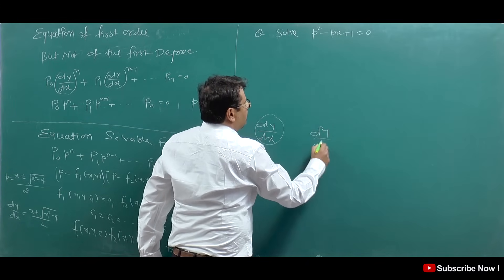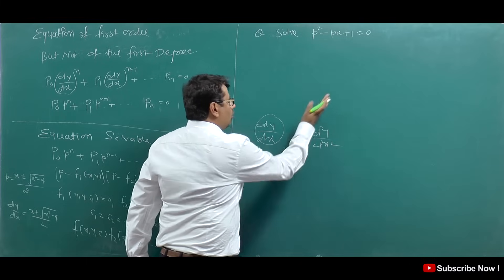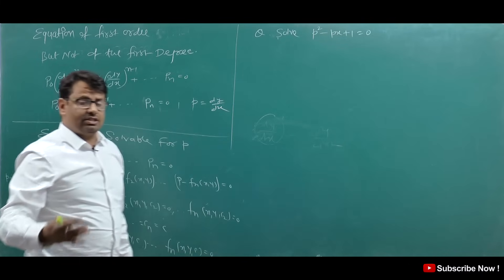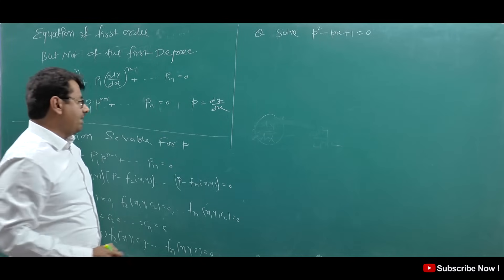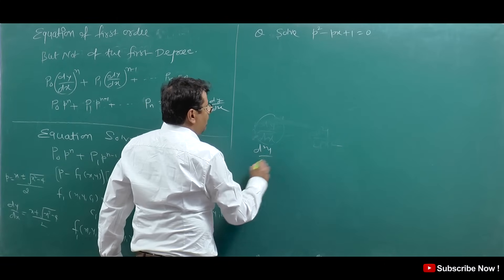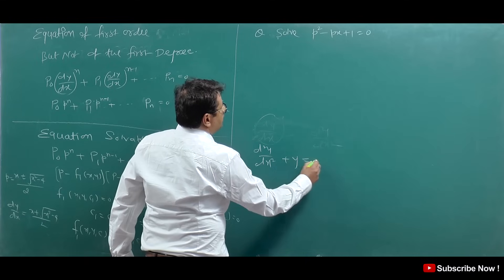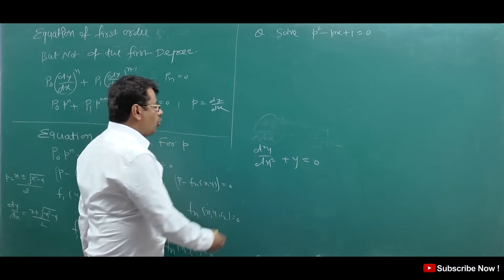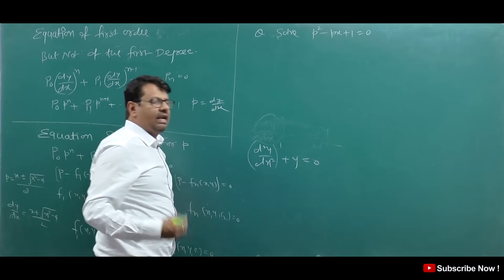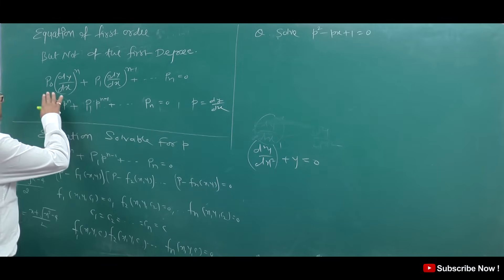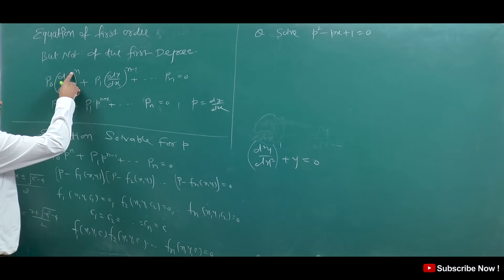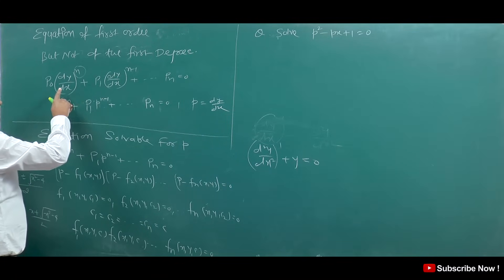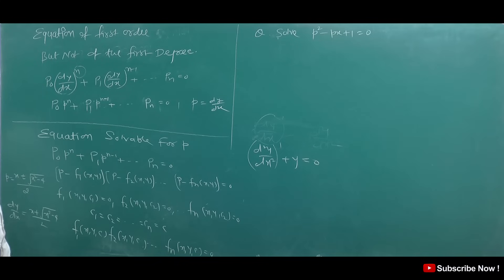The second order derivative is d²y/dx². The highest order derivative present in the equation is the order. For example, d²y/dx² + y is a second order differential equation. After that, the highest power of the highest order derivative is the degree. So if the order is one and the highest power is n, that is a first order and n-th degree differential equation.